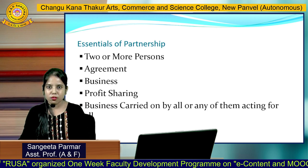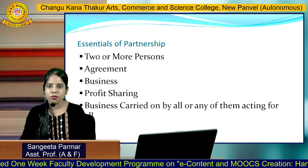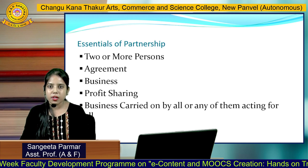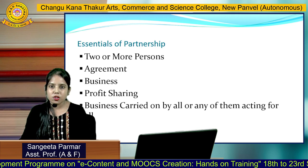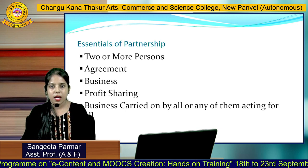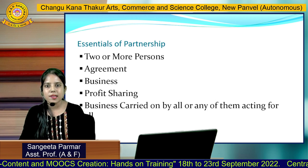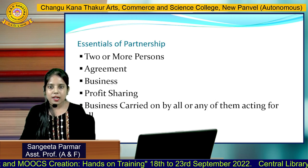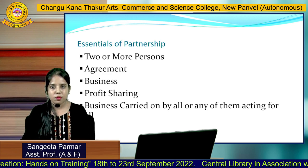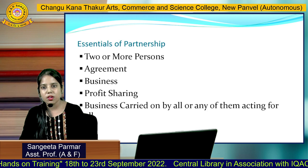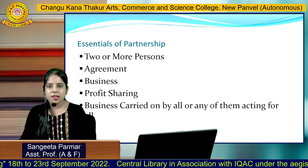The first essential is two or more persons. To form a partnership firm there must be a minimum of two persons. The maximum is not specified in the Partnership Act itself, but as per Section 464 of the Companies Act 2013, the maximum number for a partnership firm is 50. The second essential is agreement — there must be an agreement between the partners to form a partnership firm.